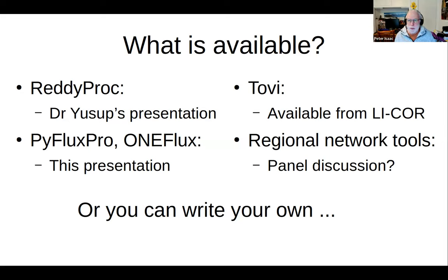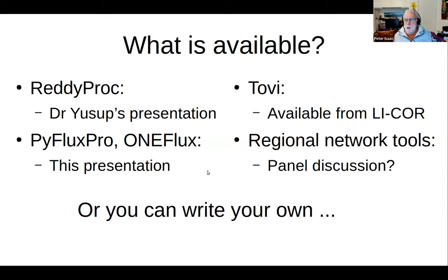Another option to mention is Tovi, available from LI-COR on a subscription model — around $1,000 a year, though they've got cheaper student versions now. There are also a lot of regional network tools — MATLAB scripts that people have put together over the years. If we've got time in the panel discussion, I'd love people to talk about those because different people have different ideas, and if we listen to each other, perhaps we can put together something with the best parts of all of them.